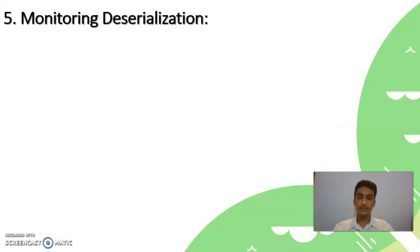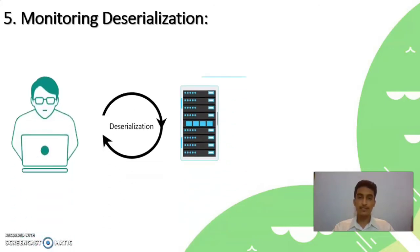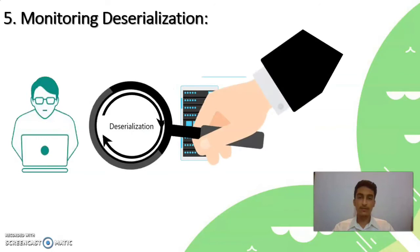The fifth method is monitoring deserialization. If you encounter a situation where a user is sending requests for object deserialization very frequently, there is a possibility that he is trying to do something malicious or breach the security of the system. In such a case, you can temporarily block the user, generate a proper warning, and then analyze the log of his previous activity. This is how monitoring deserialization works.